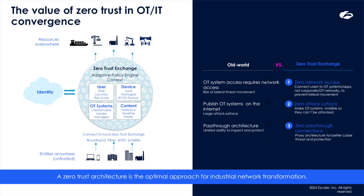IT and OT convergence is transforming industries by driving efficiency and innovation. However, it also creates new cybersecurity risks as traditionally isolated OT systems are exposed to IT networks and the broader internet. Threat actors, as a result, can exploit this expanded attack surface targeting critical infrastructure and sensitive systems. Zscaler addresses these challenges with a zero-trust approach based on the principle of never-trust, always-verify. Every user, device, and application is authenticated and authorized before accessing critical systems, ensuring secure connections while minimizing cyber risk.